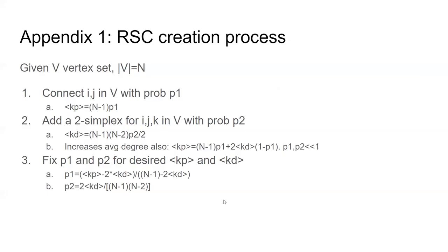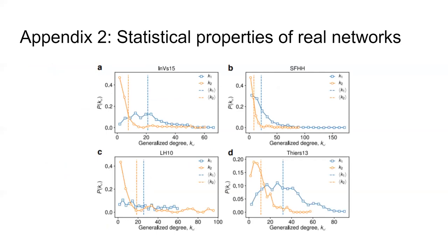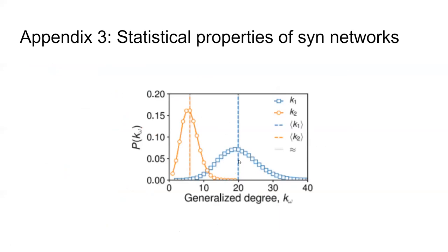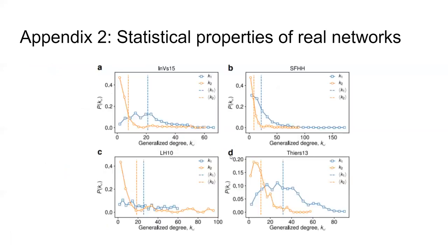A final visualization shows the difference in statistical properties between real-world networks and synthetic networks — the synthetic ones have nicer global connectivity and local approximations average out, whereas real-world networks are on the whole more fat-tailed. The instructor thanks Eric and Alex for the presentation and invites questions or closing comments.